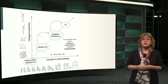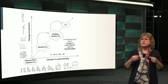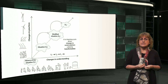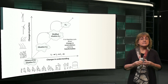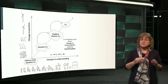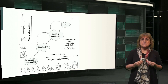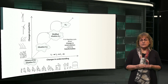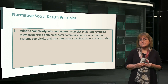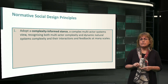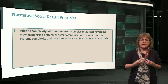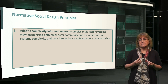We will begin by distilling the normative social design principles. These derive from a systems approach — a complexity-informed stance that acknowledges intrinsic uncertainties in dealing with multiple stakeholders in a dynamic wetland environment. We embrace the notion of multiple perspectives and partial solutions along an ever-evolving development path. For a particular locality with its local stakeholders, a Building with Nature infrastructure design becomes a place-based intervention. The first normative principle is to adopt a complexity-informed stance, recognising both multi-actor complexity and dynamic natural systems complexity, as well as their interactions and feedbacks at many scales.